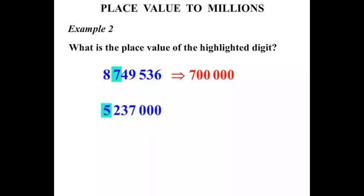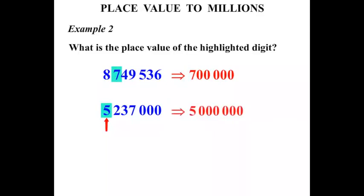This next one: five million, two hundred and thirty-seven thousand, where the five is highlighted. What is it worth? Ones, tens, hundreds, thousands, ten thousands, hundred thousands, millions. We've got five in the millions place — that's worth five million.